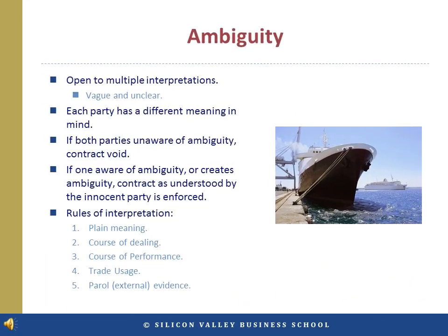Ambiguity means that the language of the contract has more than one meaning and reasonable people could disagree over what the language means. In a classic case, a contract was made to sell 125 bales of cotton to arrive on a ship called Peerless that sailed from Bombay, India. Unknown to the parties, two ships of the same name were to arrive from the same port during different months of the same year. This extraneous fact created ambiguity in an otherwise clear and definite term of the contract. The court determined there was no contract on the grounds of ambiguity.